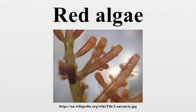They produce monospores from monosporangia, just below a cross wall in a filament, and their spores are liberated through the apex of the sporangial cell. The spores of a sporophyte produce either tetrasporophytes. Monospores produced by this phase germinate immediately, with no resting phase, to form an identical copy of the parent.